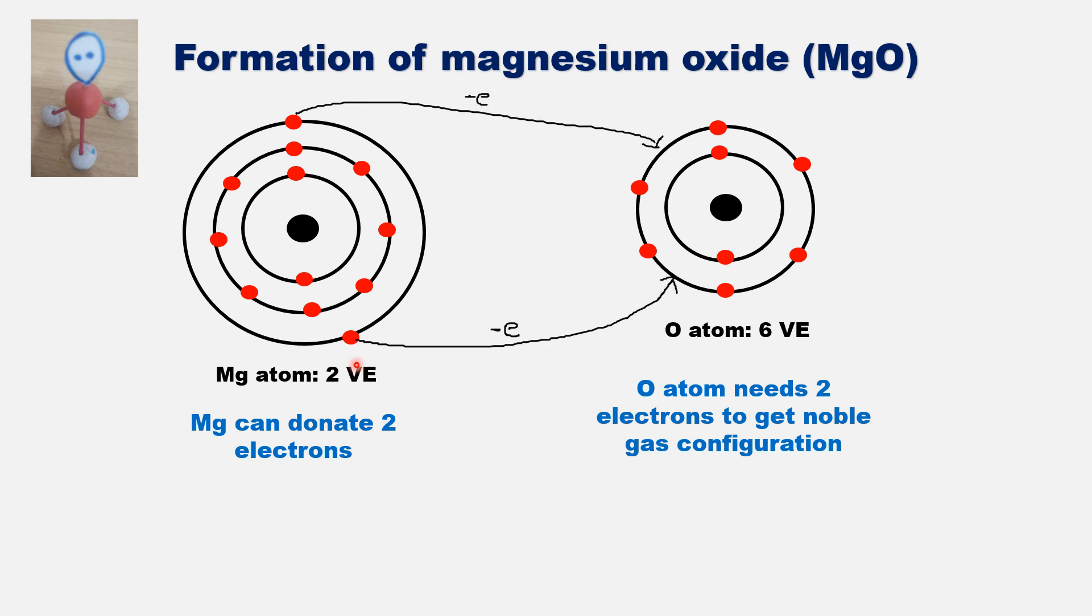If magnesium loses two electrons it will get a noble gas configuration, that means completely filled orbital. Similarly, if oxygen accepts two electrons it will be getting a noble gas configuration.